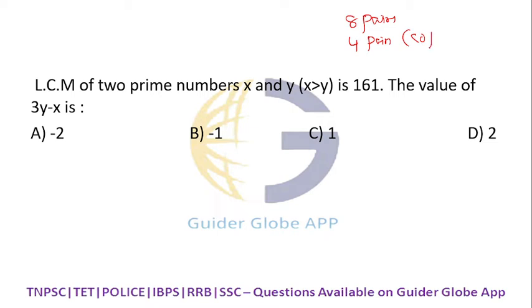Co-prime - how many pairs of such co-primes are available? You mark the answer as 4. If they don't mention co-prime, simply mark the answer as 8. Okay, next: LCM of two prime numbers is 161. What prime numbers? 7 multiply by 23, you will get 161.